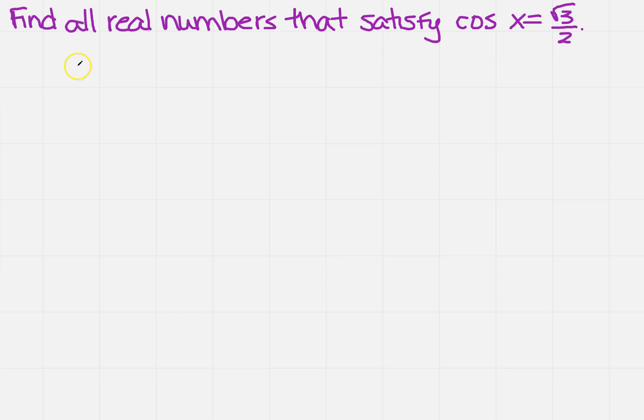We're going to use the inverse cosine to help us find the value of x. So we take the inverse cosine of √3/2. What is the inverse cosine of √3/2? That's going to be the angle π/6.